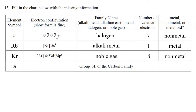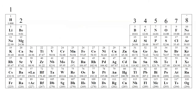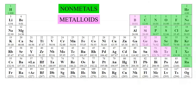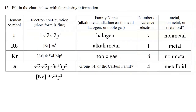Finally, silicon (Si) has 14 electrons: 1s²2s²2p⁶3s²3p². You can abbreviate the 1s²2s²2p⁶ as [Ne], so the configuration is [Ne]3s²3p². That gives 4 valence electrons, placing it in the same family as carbon and germanium in group 14. Silicon is a metalloid.